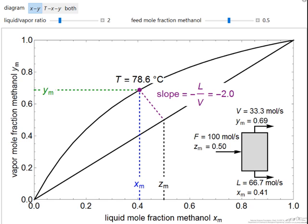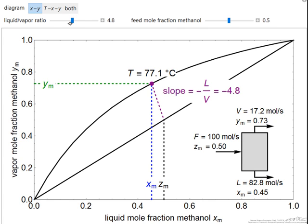Here is the interactive simulation. If I change the ratio of liquid to vapor leaving the flash drum, then to satisfy mass balances, to obtain that ratio for the given feed composition, I have different values of the mole fractions and a different temperature.